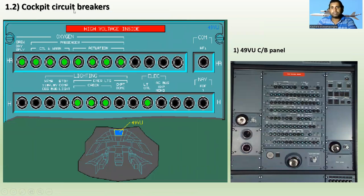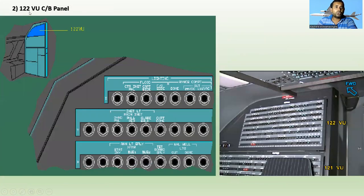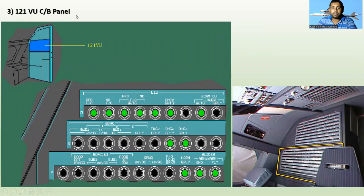Now the cockpit circuit breaker panels. The first one is the 49VU panel in the overhead panel, which we used in the overhead panel video. You can see circuit breakers belonging to the oxygen system, lighting, ELAC, and navigation. The next one is the 122VU circuit breaker panel, located aft of the first officer's seat. It includes circuit breakers for lighting, auxiliary light supply, test board supply, wheel well, and dome lights. The 121VU circuit breaker panel is the third occupant seat panel, situated behind the third occupant seat.